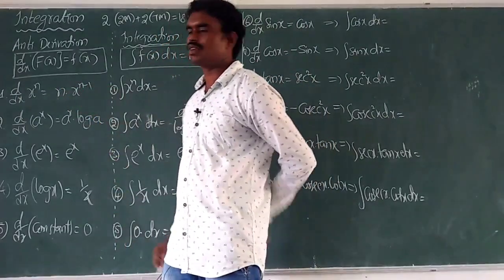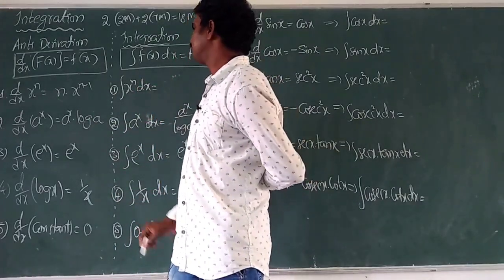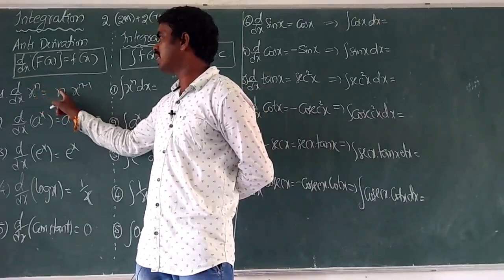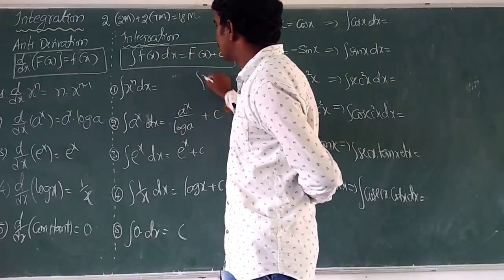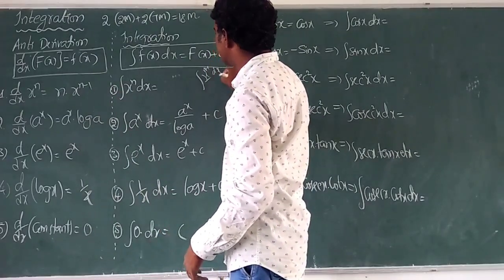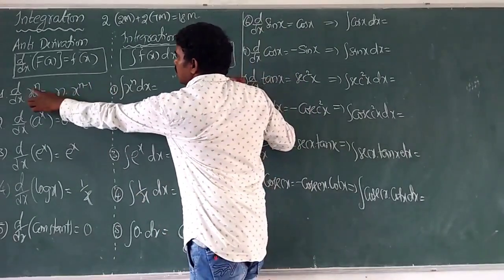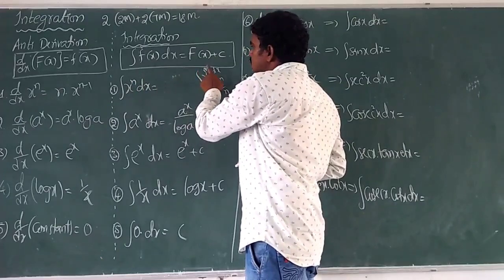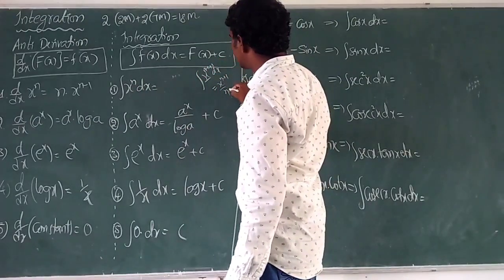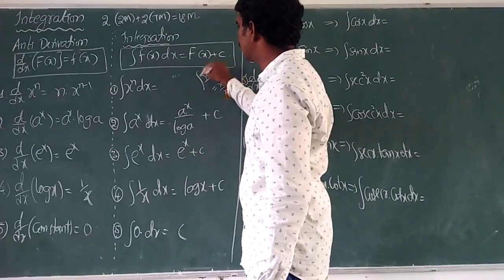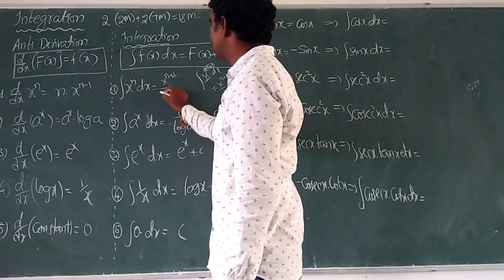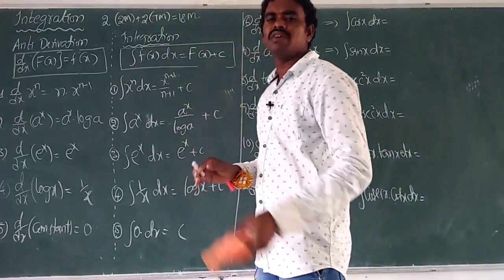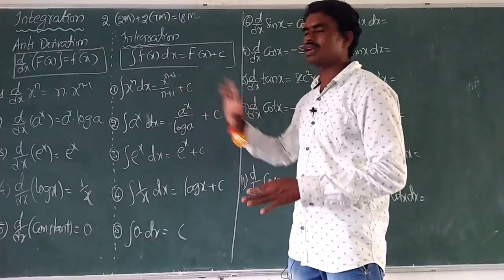Derivation of x^n is n·x^(n-1). We want to find the integration of x^(n-1), which becomes x^n divided by n. Using this formula, if we increase the power by 1 (plus 1) and divide by the new power (n+1), we get x^(n+1) divided by (n+1), plus c.